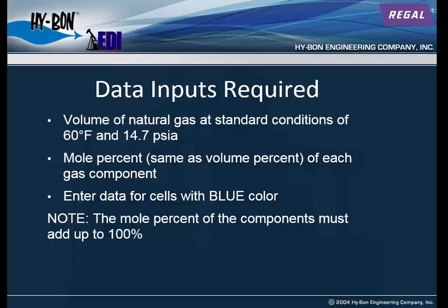Data inputs required include volume of natural gas at standard conditions — 60 degrees Fahrenheit, 14.7 PSIA — and the mole percent, which is the same as the volume percent of each gas component. You're going to want to enter your own gas analysis, not the one that comes preloaded on the calculator when you download it. Enter data for the cells with blue color.